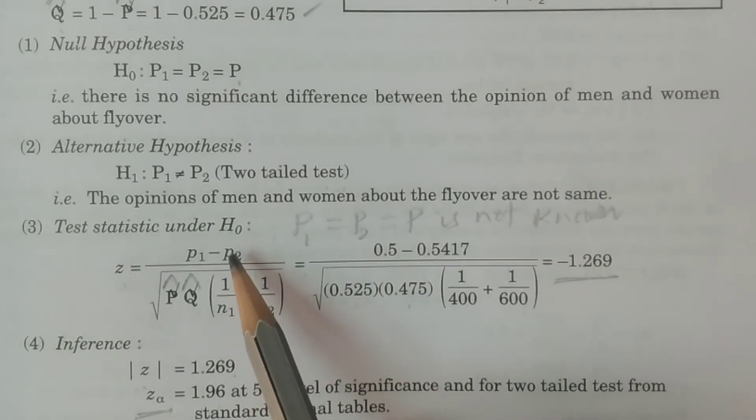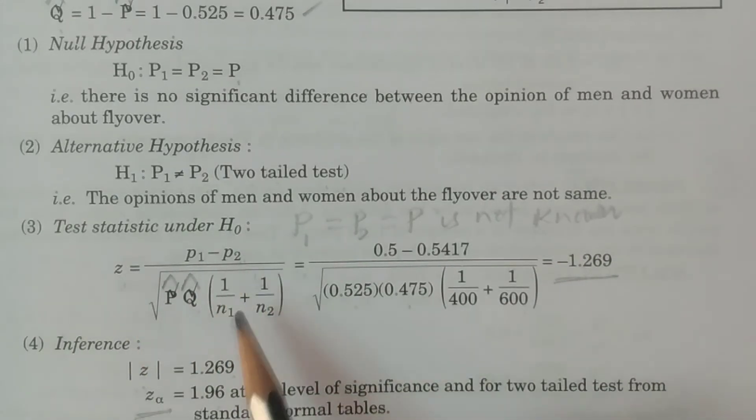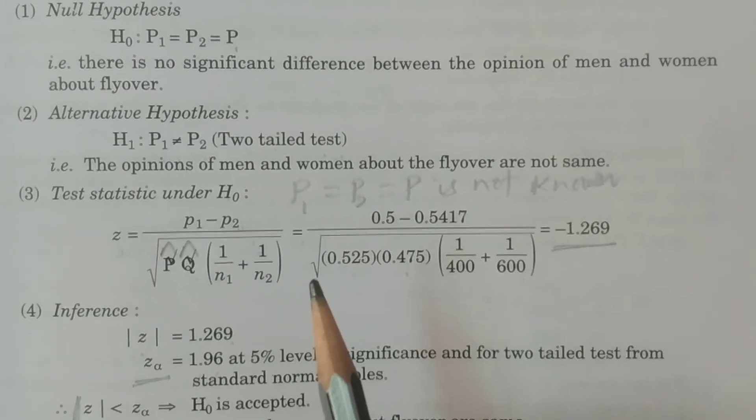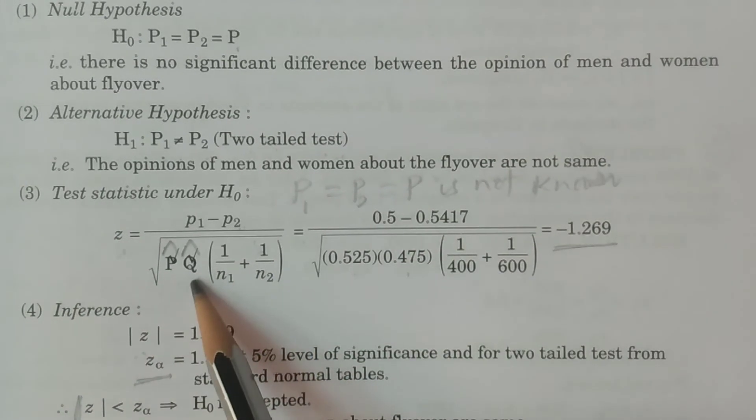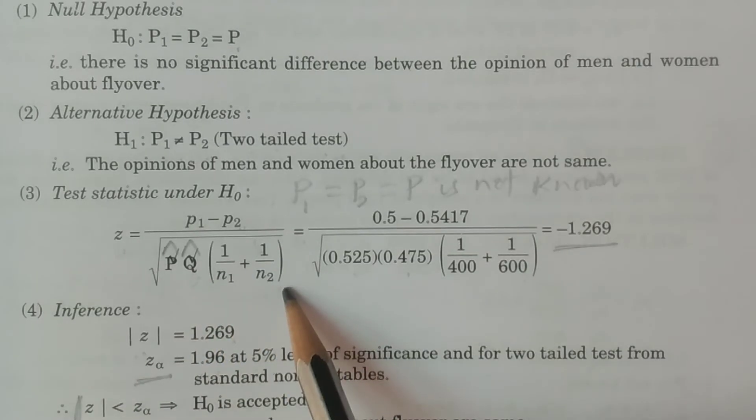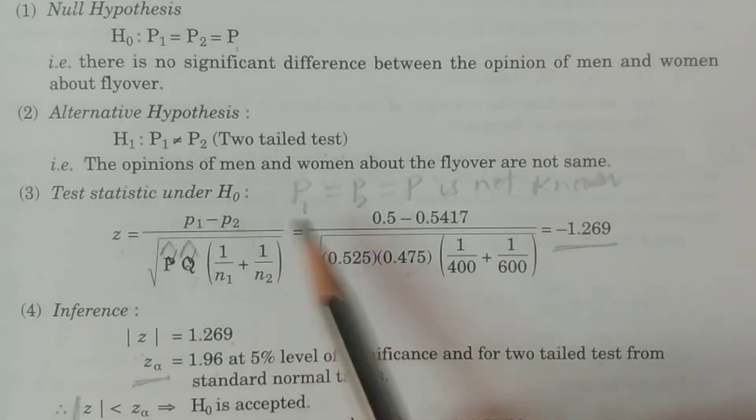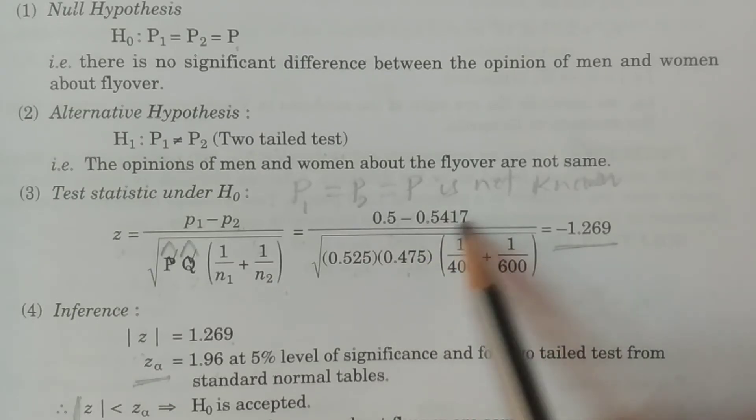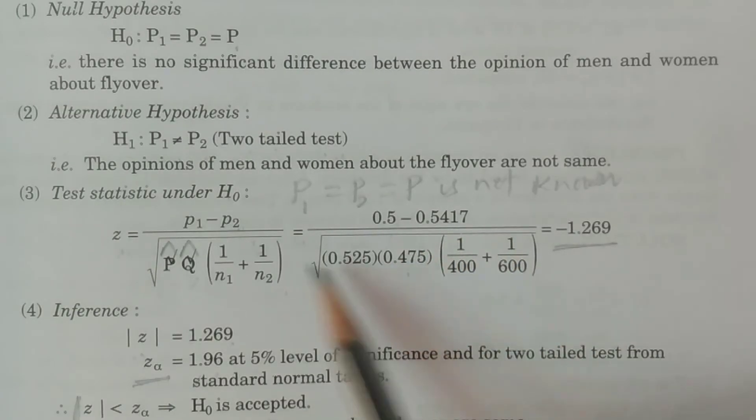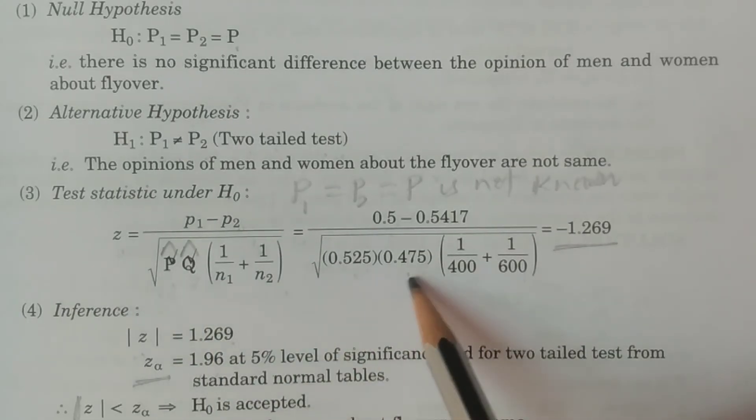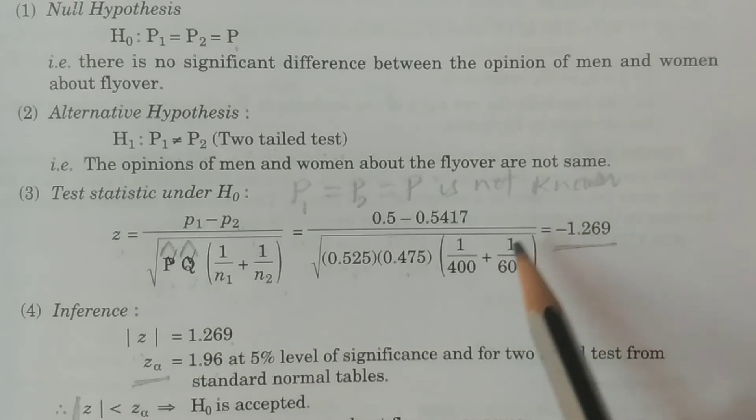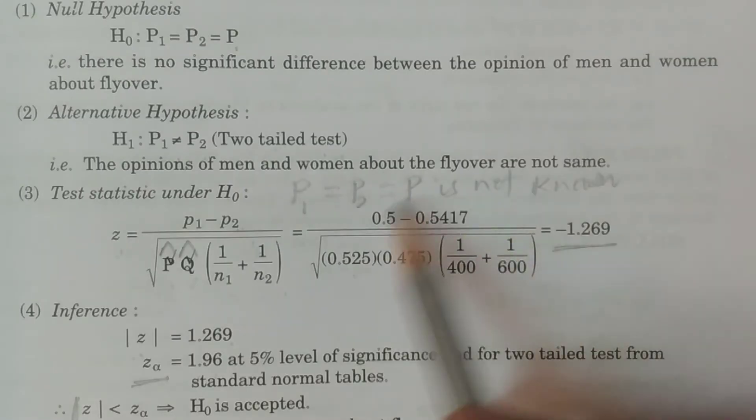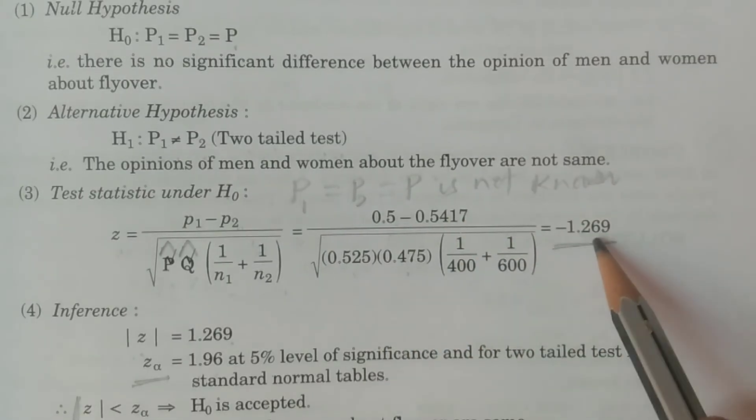The test statistic under H0: Z equals p1 minus p2 divided by square root of P cron times Q cron times (1/n1 plus 1/n2). Substituting values: 0.5 minus 0.5417 divided by square root of 0.525 times 0.475 times (1/400 plus 1/600). After calculation, this equals minus 1.269.